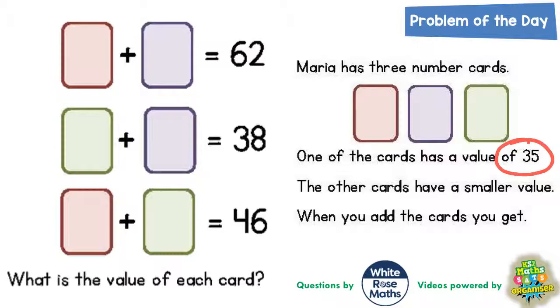Because we don't know which card is worth 35, all we can do is pick a card to try and see where that takes us. So we'll try red being 35 and see what happens.